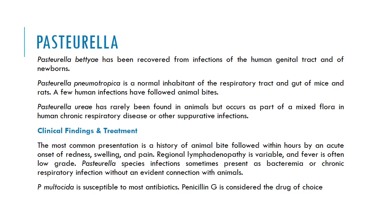Pasteurella canis has been recovered from infections of the human genital tract and bones. Pasteurella pneumotropica is a normal inhabitant of the respiratory tract and gut of mice and rats; a few human infections have followed animal bites, meaning Pasteurella pneumotropica is transmitted to humans through animal bites. Pasteurella ureae has rarely been found in animals but occurs as part of a mixed flora in human chronic respiratory disease or other suppurative infections. The most common presentation of Pasteurella infection is a history of animal bite followed within hours by an acute onset of redness, swelling, and pain of the bite region. Regional lymphadenopathy is variable and fever is often low grade. Pasteurella infection sometimes presents as bacteremia or chronic respiratory infection without an evident connection with animals. Pasteurella multocida is susceptible to most antibiotics; penicillin G is considered the drug of choice.